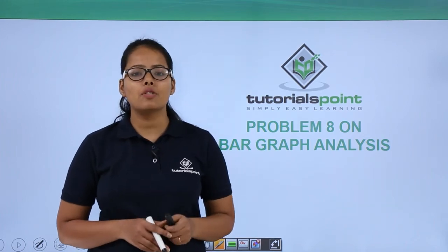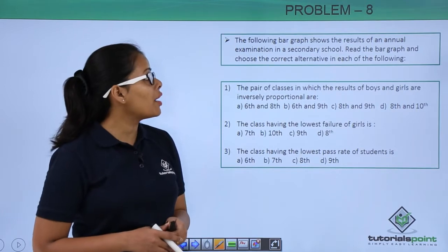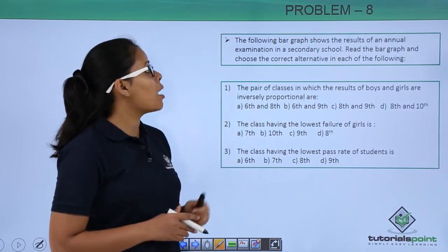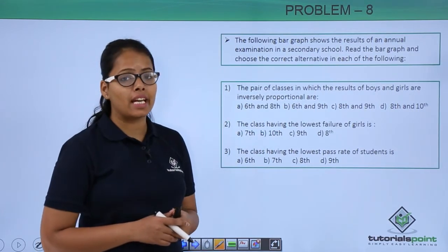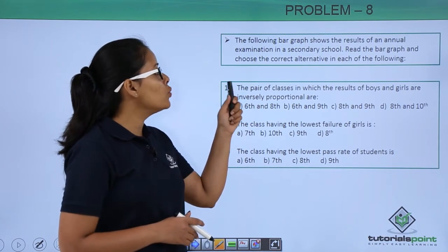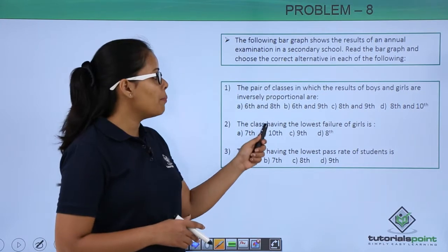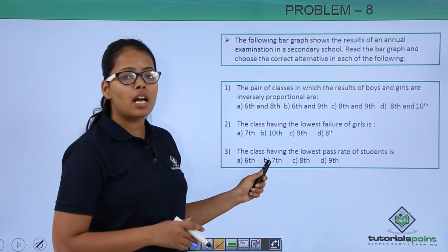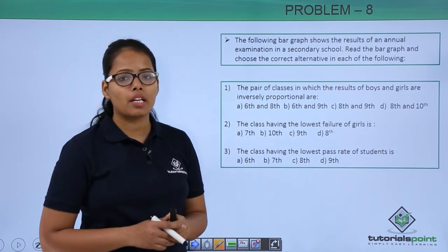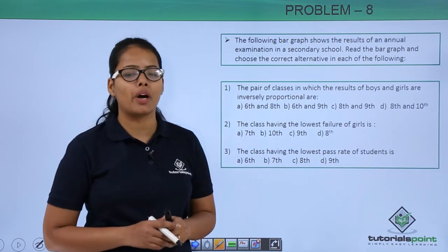Let's understand this problem. The problem says the following bar graph shows the results of an annual examination in a secondary school. Read the bar graph and choose the correct alternative in each of the following. So let's analyze the bar graph and then we are going to answer these questions one by one.